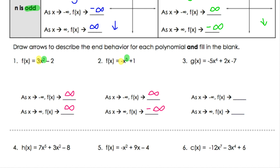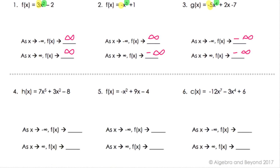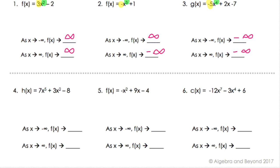Number three has fourth degree, which is even — so ends go in the same direction — with a negative five out in front, meaning both ends are pointing downward. Number four has fifth degree (odd) with a positive leading coefficient, so the left side goes downwards to negative infinity and the right side goes upwards towards positive infinity.